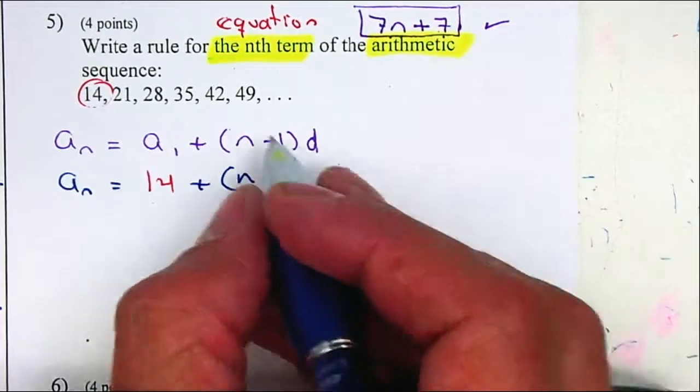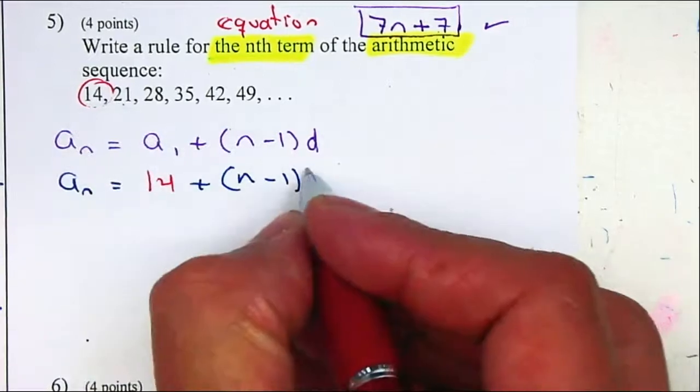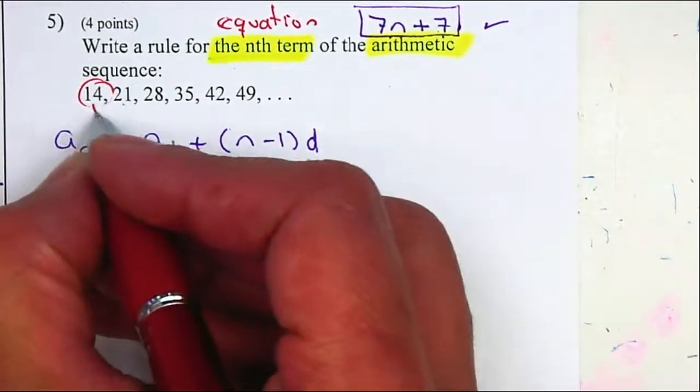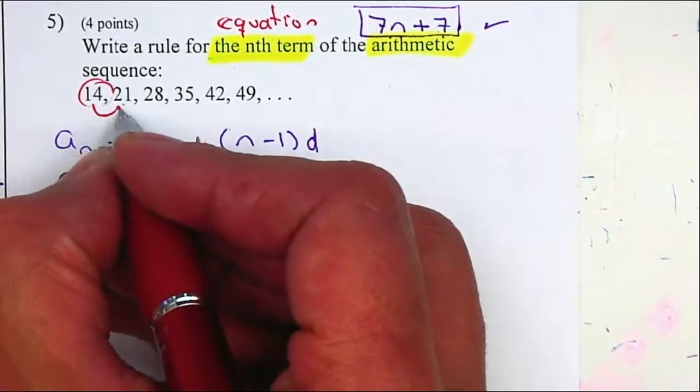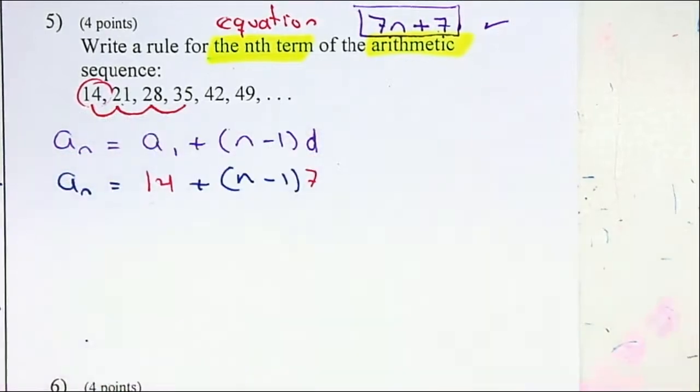The difference can be found by subtracting 21 minus 14, which is 7. Or you can just think, what do I need to add to 14 to get to 21, and then get to 28, and to 35 will be 7. From here, we'll just simplify, 7 times n will be 7n.